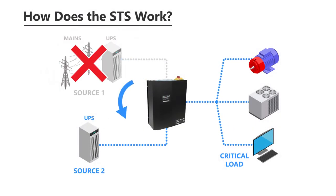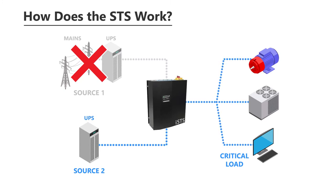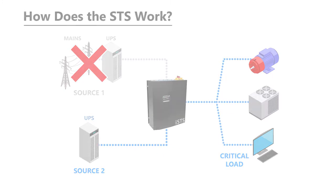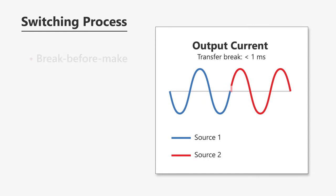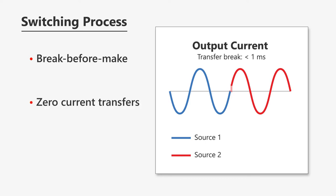The STS automatically and seamlessly switches to the alternate power source upon detecting a fault or failure. The switching process is break-before-make to avoid paralleling power sources. Transfers are performed at zero current to eliminate any impact on the load. Solid-state switching components enable rapid transfers with minimal break time.